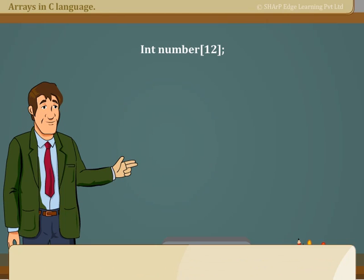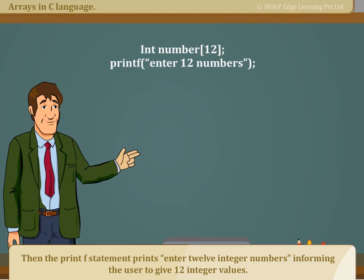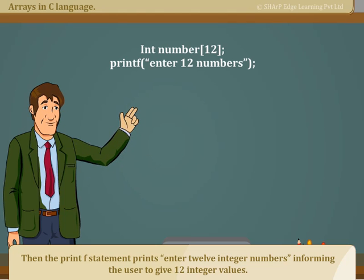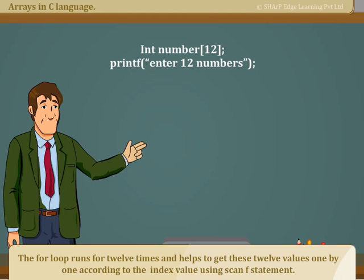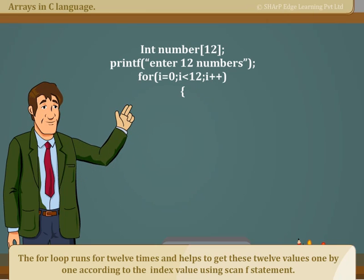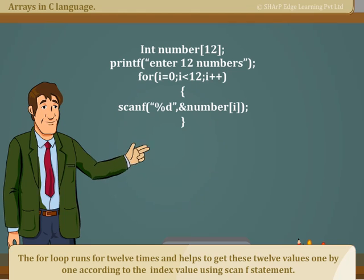Another way to initialize an array is to first declare an array of integer type having 12 elements. Then the printf statement prints, enter 12 integer numbers, informing the user to give 12 integer values. The for loop runs for 12 times and helps to get these 12 values one by one according to the index value using scanf statement.